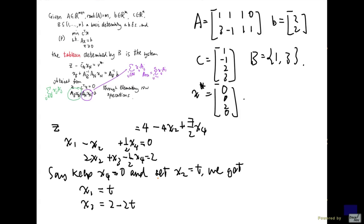But we want feasible solutions, so we need t to be at most 1 for x_1 and x_3 to be non-negative.